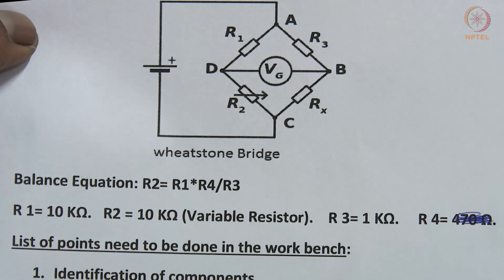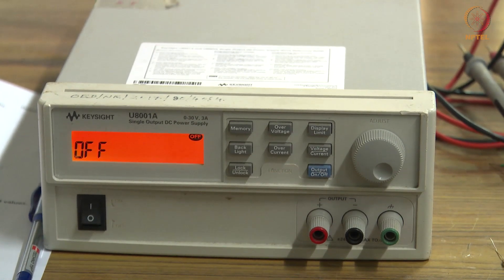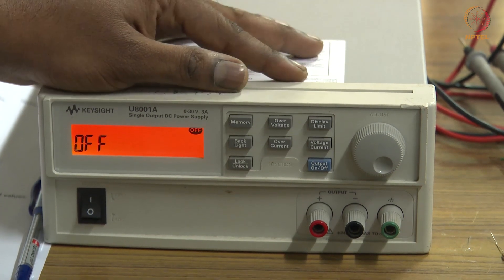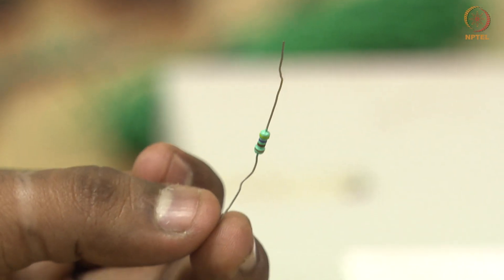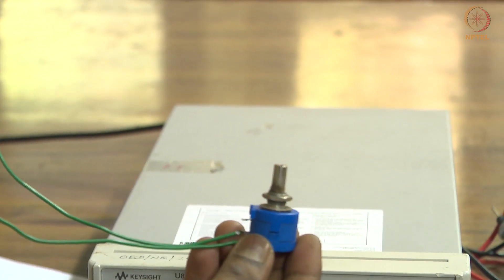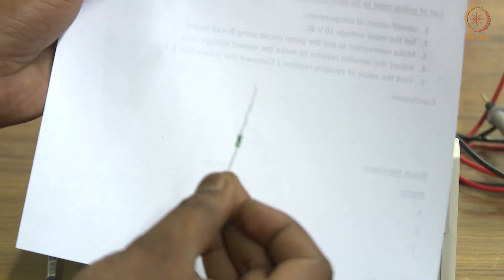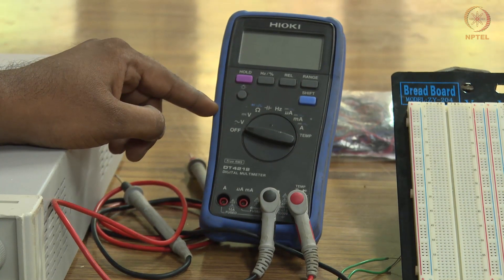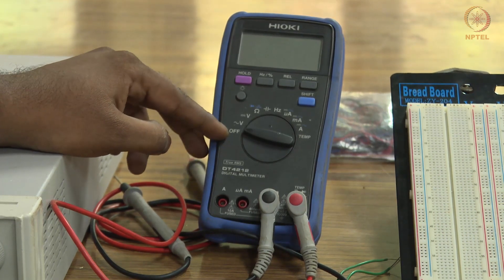The instruments and components required to construct this Wheatstone bridge are: one DC power supply where we can set the DC voltage, a 10 kilo ohm resistor which is R1 in our circuit, a variable resistor which is R2, and a digital multimeter where we can measure voltage, current, resistance, etc.